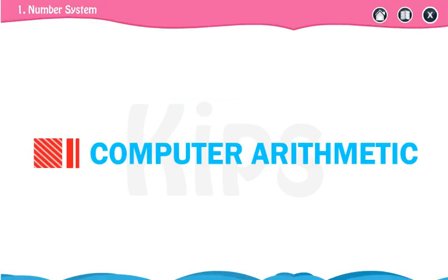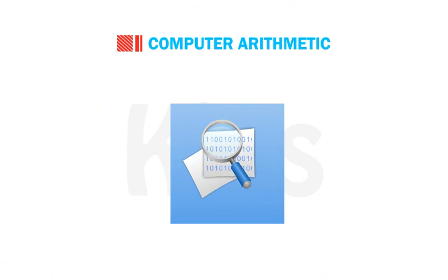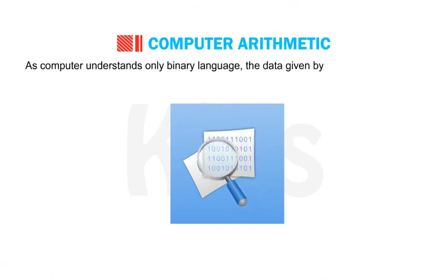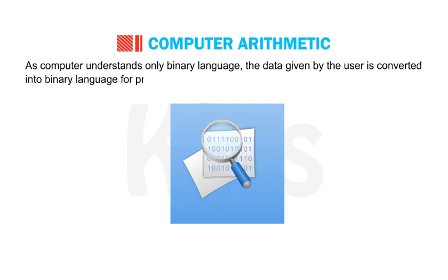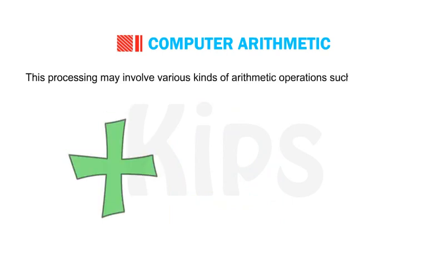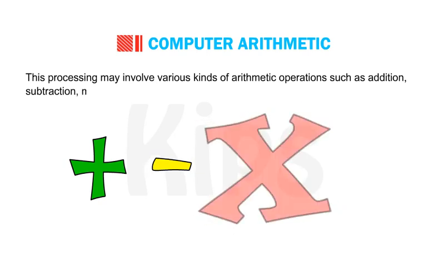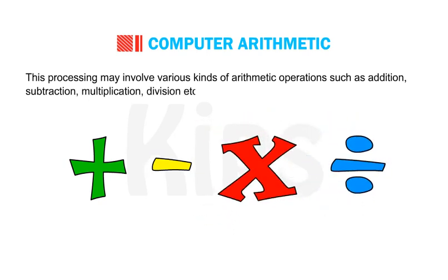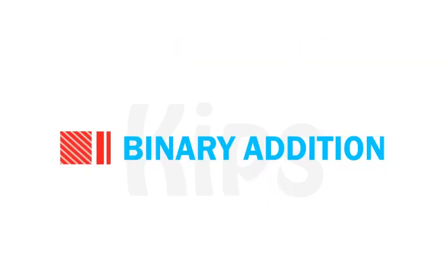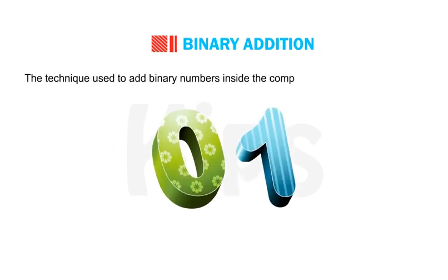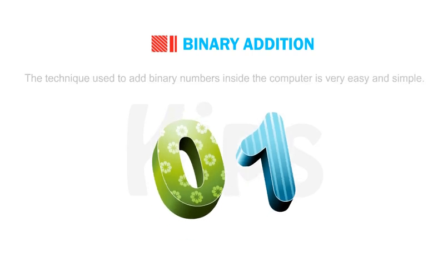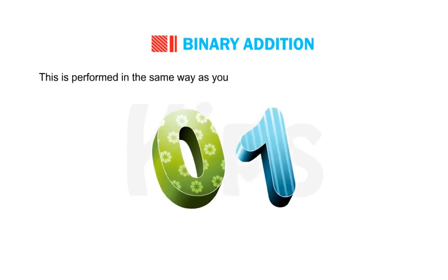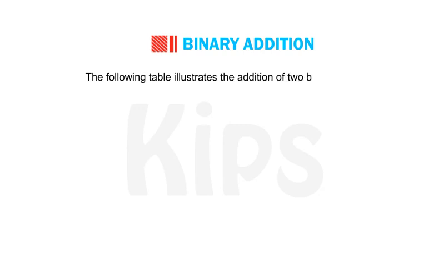Let us now find out what computer arithmetic is. As the computer understands only binary language, the data given by the user is converted into binary language for processing. This processing may involve various kinds of arithmetic operations such as addition, subtraction, multiplication, and division on binary numbers. Now let us find out how binary addition takes place. The technique used to add binary numbers inside the computer is very easy and simple, performed in the same way as addition with decimal numbers.